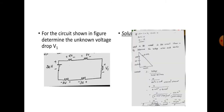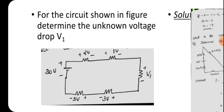This is the continuation of the network theory class. Last class we came through a problem: for the circuit shown in the figure, determine the unknown voltage drop V1. The circuit has a 30-volt battery, resistance with voltage drop of 2 volt, another with 1 volt, then V1, and other voltage drops of 3 volt and 5 volt. The plus and minus symbols show that current flows from higher potential to lower potential.